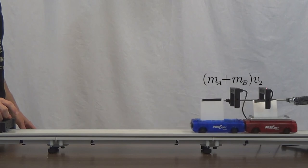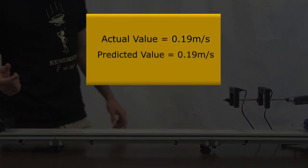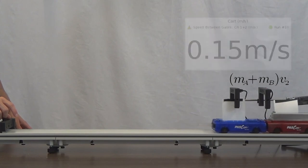While there is some experimental error due to frictional losses in the system, as well as the sensitivity of the equipment used to measure velocity, the predictions are met most of the time.